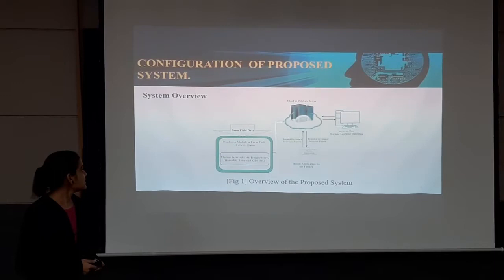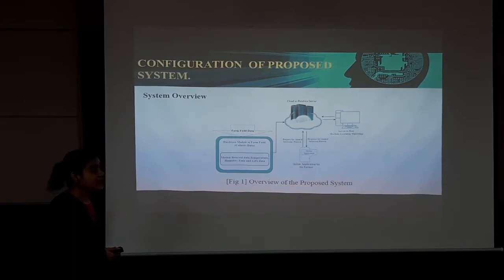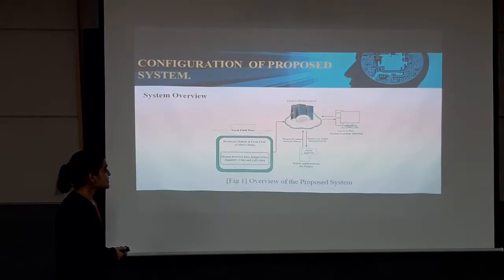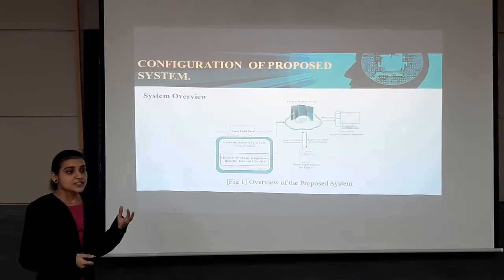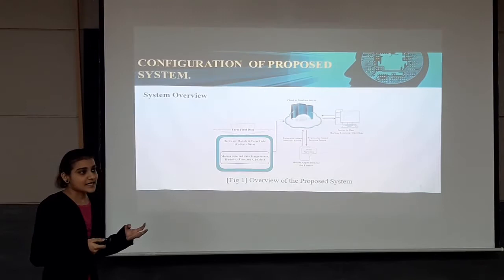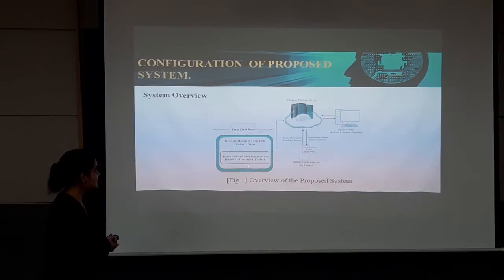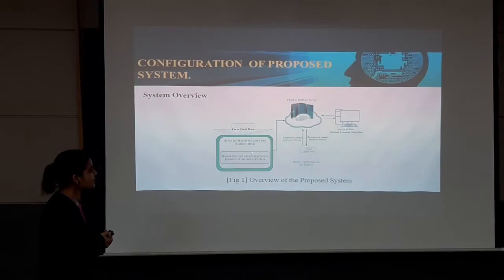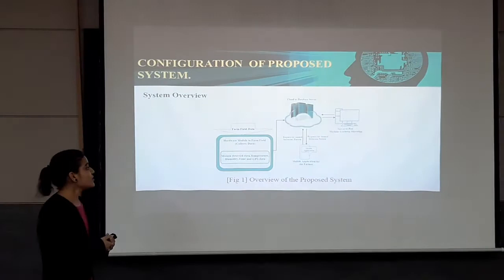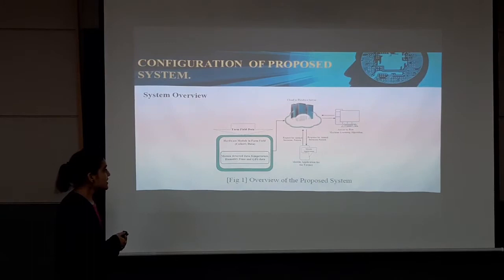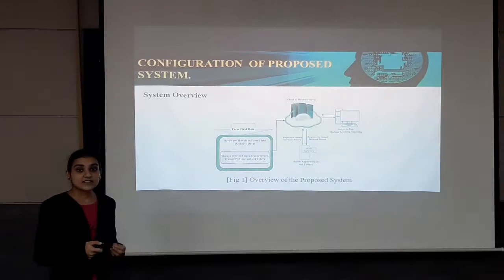Here is the configuration of the proposed system. We can see the system overview. In the field, we will test our hardware module, which includes Raspberry Pi, GPS module, motion sensors and DHT, as well as environmental sensors that can collect temperature, humidity, and rain data. On the farm field, there will be a hardware module deployed. All data collected by this hardware module will be sent to the cloud database, where we will store the data generated by this hardware module.